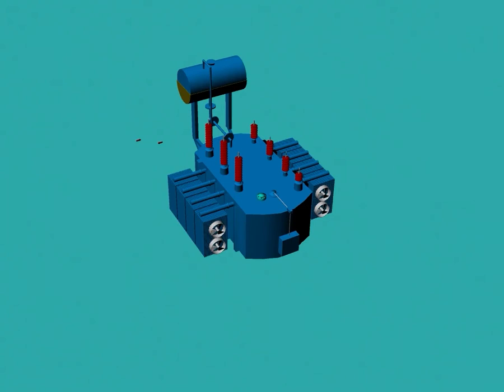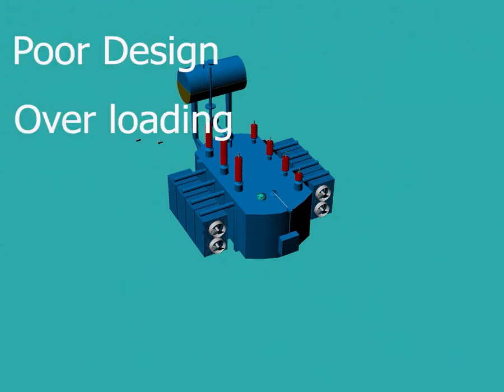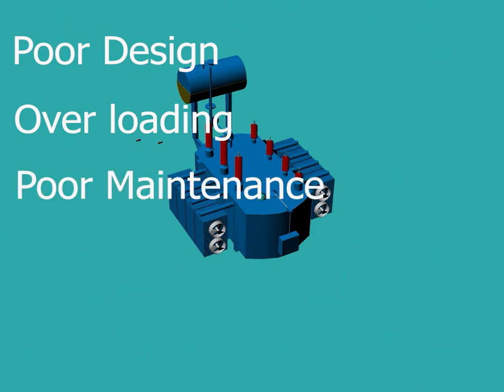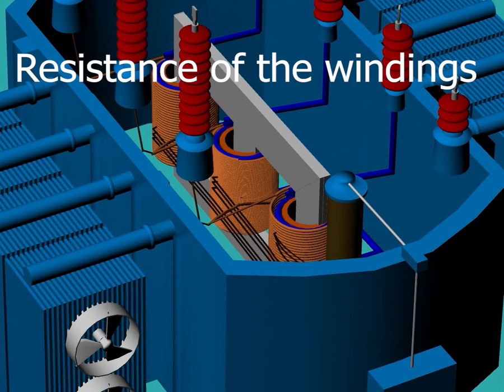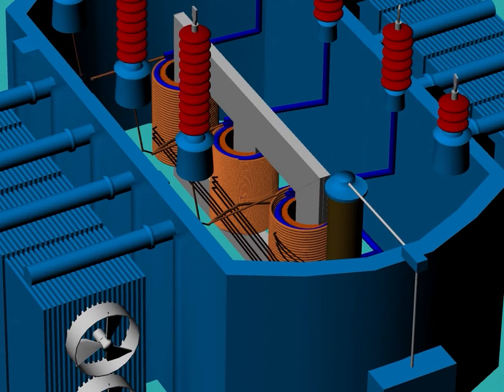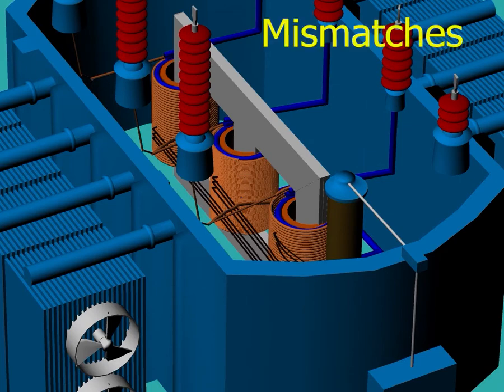Problems or faults can occur in a transformer due to poor design, loading, or poor maintenance. By measuring the resistance of the windings, we make sure that connections are correct and there are no severe mismatches or open circuits.